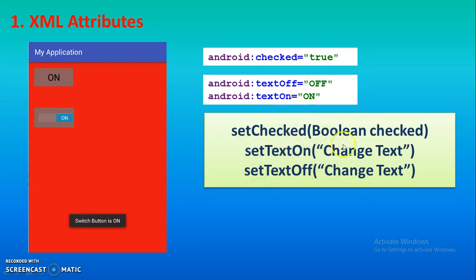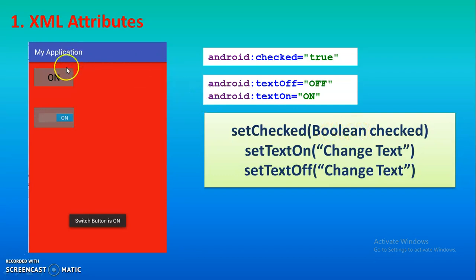By using the Activity Java file also you can do the coding. For that you have three kinds of methods: setChecked, setTextOn, and setTextOff. By using the first method, setChecked, you can change the state of the button. Suppose your toggle button or switch is in the on state — you can change it to the off state using setChecked.